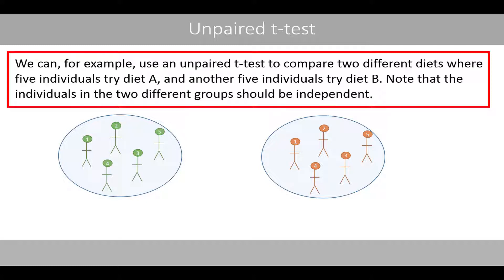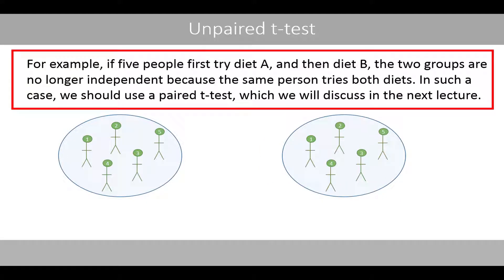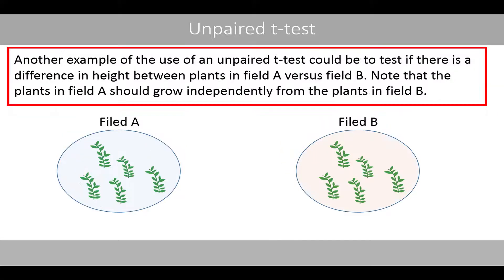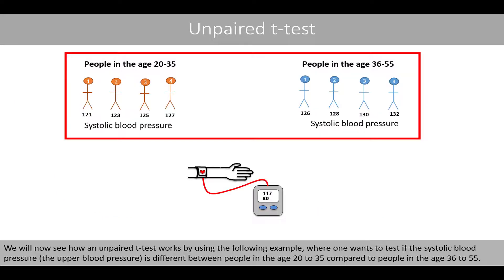Note that the individuals in the two different groups should be independent. For example, if five people first tried diet A and then diet B, the two groups are no longer independent because the same person tries both diets. In such a case, we should use a paired t-test, which we will discuss in the next lecture. Another example of the use of an unpaired t-test could be to test if there is a difference in heights between plants in field A versus field B. Note that the plants in field A should grow independently from the plants in field B.